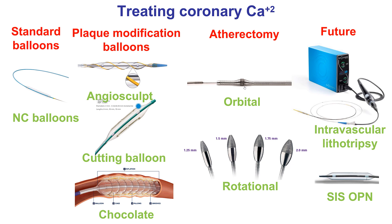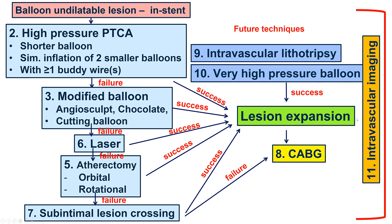How to overcome this problem? We have a lot of tools to treat calcified lesions like this one, including non-compliant balloons, which we tried; plaque modification balloons, the chocolate, which did not work; atherectomy — orbital or rotational; intravascular lithotripsy; and the very high-pressure balloon. Lithotripsy for the coronary is not yet approved in the United States. However, the peripheral catheter can be used off-label in the coronaries if it can be delivered.